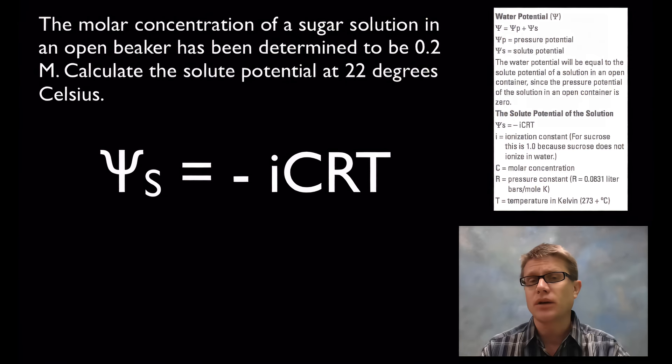So knowing that, let's throw you a quick problem. Let's say we have a molar concentration of sugar solution in an open beaker. That will become important in just a second. It's a 0.2 molar concentration. And what they're asking you to do is calculate the solute potential at 22 degrees Celsius.